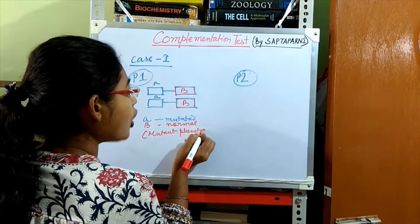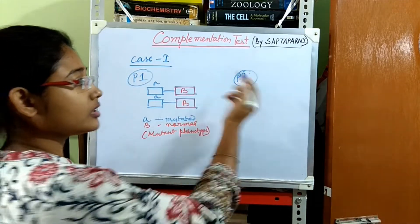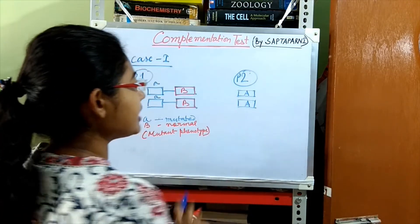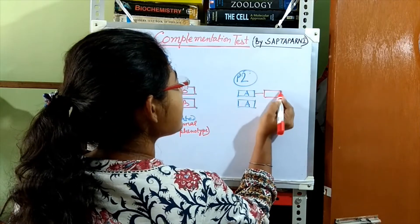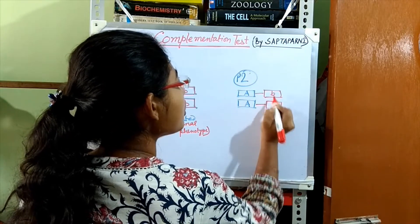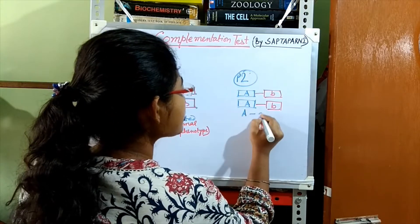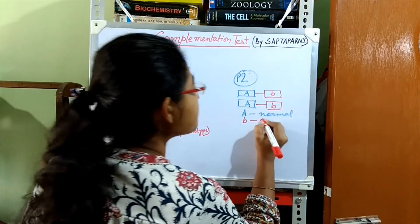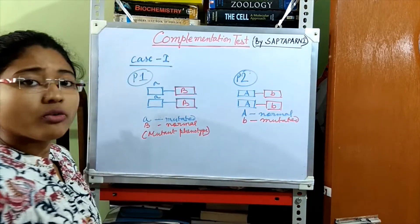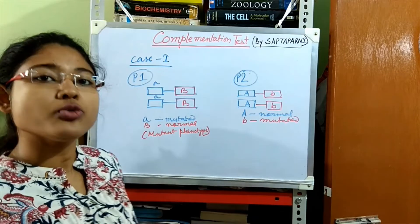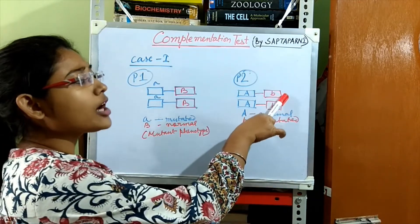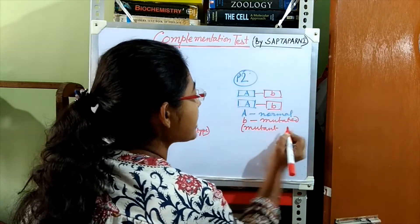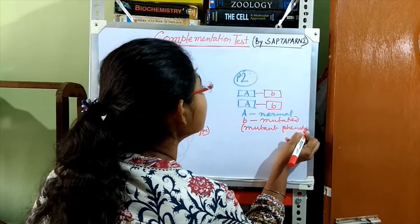On the other hand, in Parent 2, the A gene is normal (capital A, capital A) but the B genes are mutated (small b, small b). So, the functional product of the capital A gene will be produced, but no product of small b will be produced. As a result, Parent 2 will also show the same mutant phenotype as Parent 1.